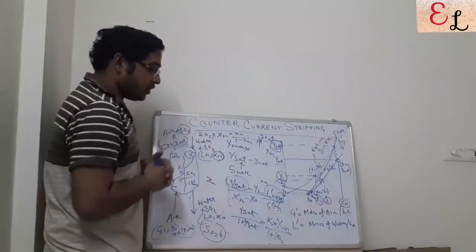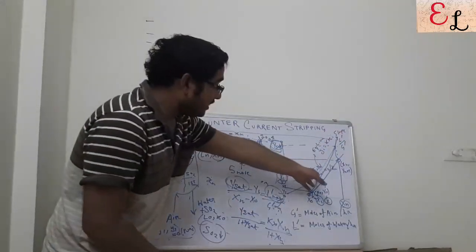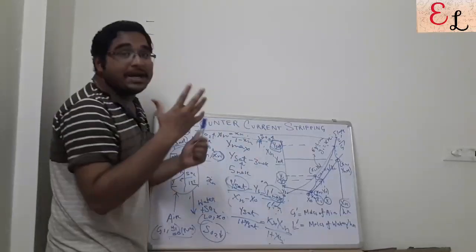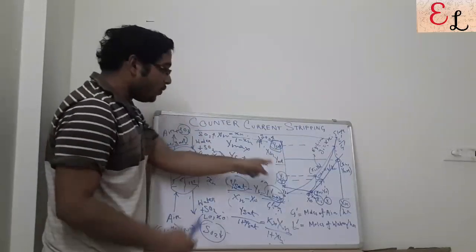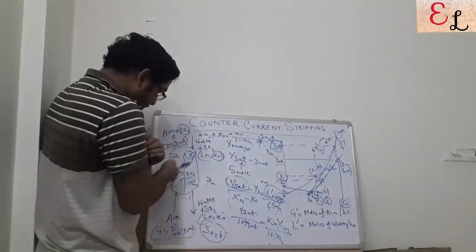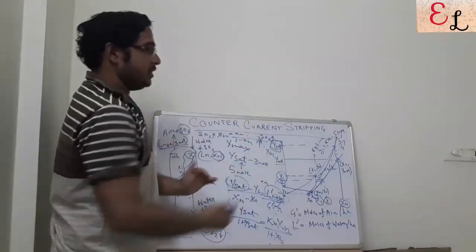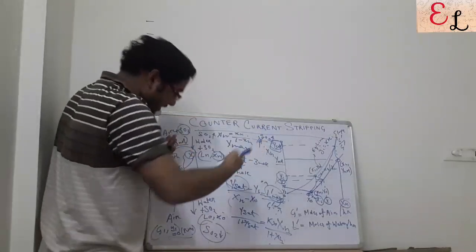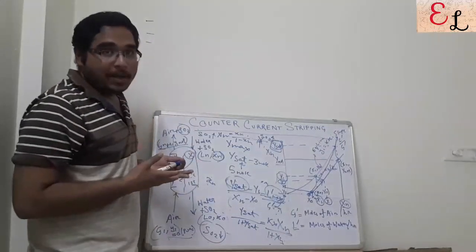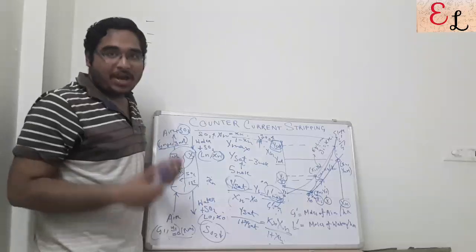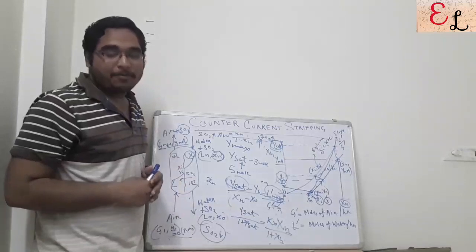To summarize: in stripping, the operating line is always below the equilibrium line. The maximum achievable Y is Y_sat, found graphically or via the equilibrium equation. The interfacial concentration always satisfies y_i > y and x > x_i as the driving force. That's all for today — we will cover co-current absorption and co-current stripping in subsequent videos. If you liked it, give it a thumbs up, share our content, and subscribe to our channel. Thank you.